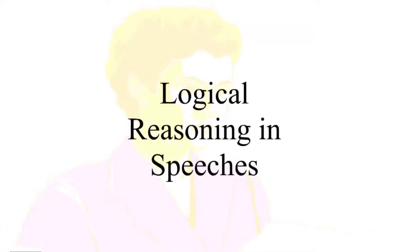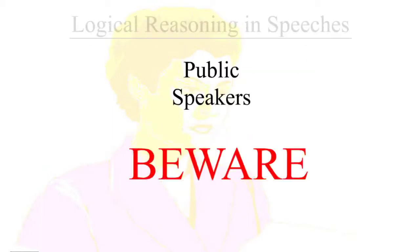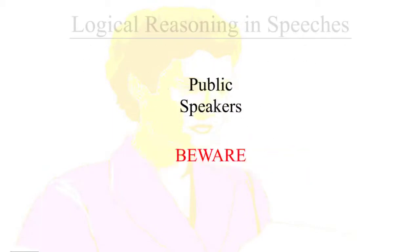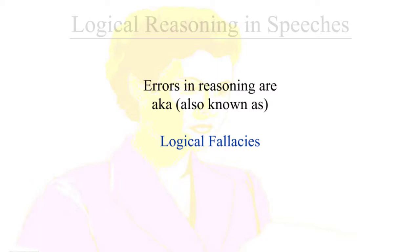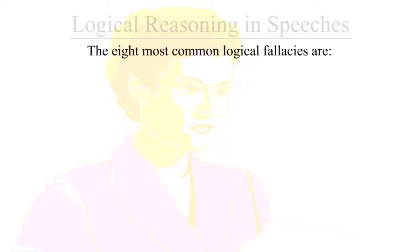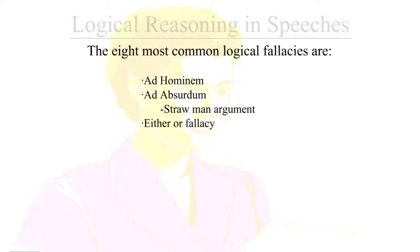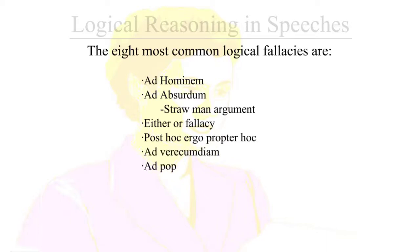Welcome to logical reasoning in speeches. Public speakers beware: errors in reasoning are also known as logical fallacies. The eight most common logical fallacies are ad hominem, ad absurdum including the straw man argument, either-or fallacy, post hoc ergo propter hoc, ad verecundiam, ad populum, red herring, and slippery slope.